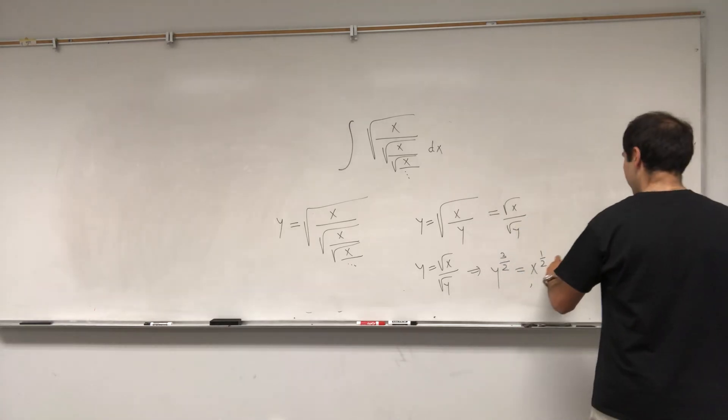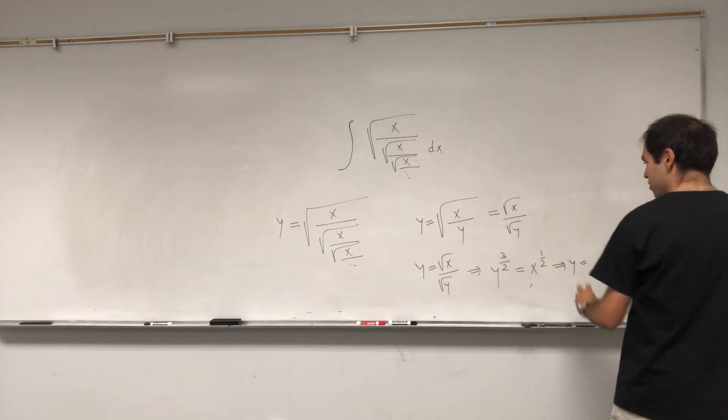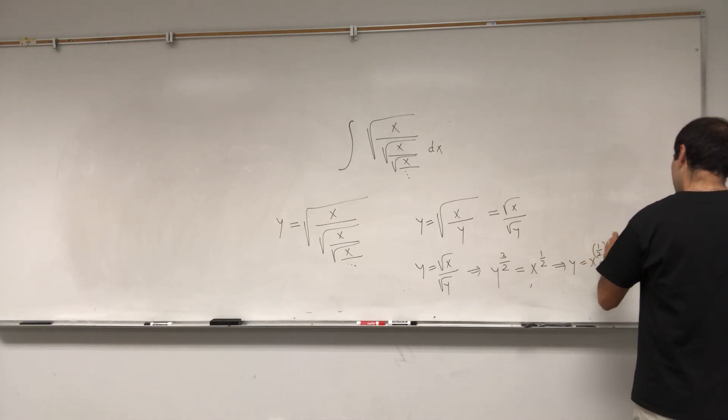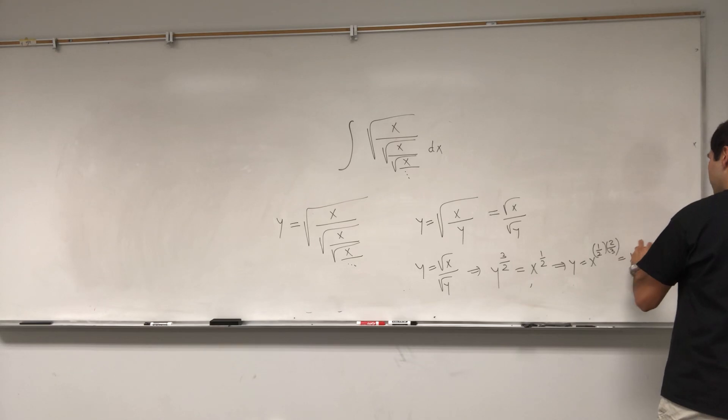And then y becomes one half times two thirds. So x to the one half times two thirds, which is just cube root of x.